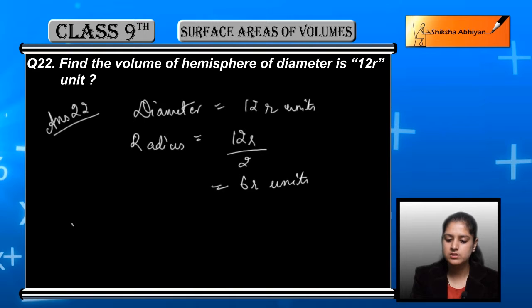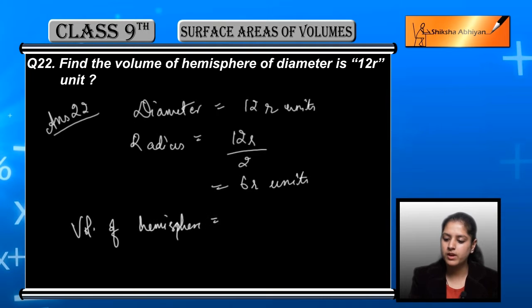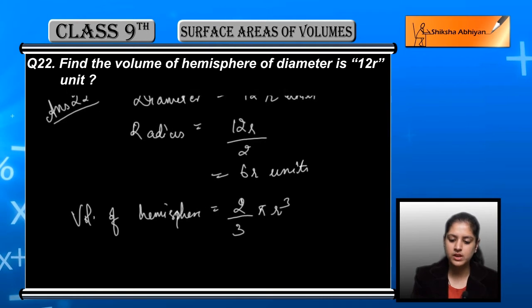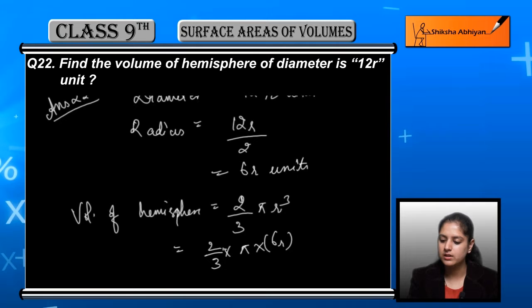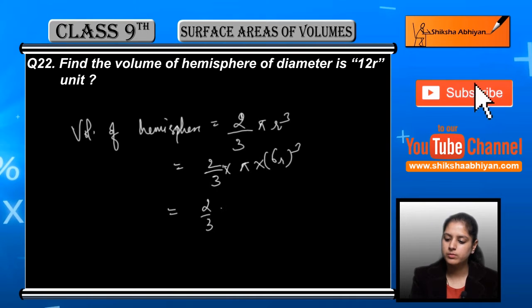6r units. Volume of hemisphere formula is 2 by 3 pi r cube, which is equal to 2 by 3 into pi into r. The value is 6r, cube, which is equal to 2